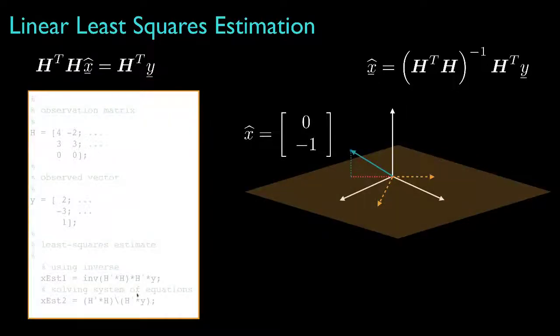Now as an example, let's look at how we might use MATLAB to solve the linear least squares problem from our previous example. Well, first we could set up the observation matrix as 4, negative 2, 3, 3, 0, 0: first column 4, 3, 0, second column negative 2, 3, 0. And here, the first column is this highlighted vector, and the second column is this highlighted vector, and those define the range space for the observation.